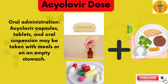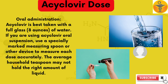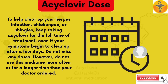Oral administration: Acyclovir capsules, tablets and oral suspension may be taken with meals or on an empty stomach. Acyclovir is best taken with a full glass — 8 ounces — of water. If you are using acyclovir oral suspension, use a specially marked measuring spoon or other device to measure each dose accurately, as the average household teaspoon may not hold the right amount of liquid. To help clear up your herpes infection, chicken pox or shingles, keep taking acyclovir for the full time of treatment, even if your symptoms begin to clear up after a few days. Do not miss any doses. Do not use this medicine more often or for a longer time than your doctor ordered.